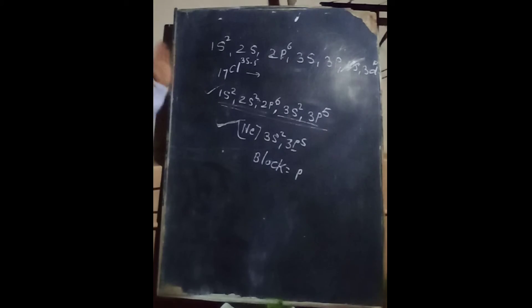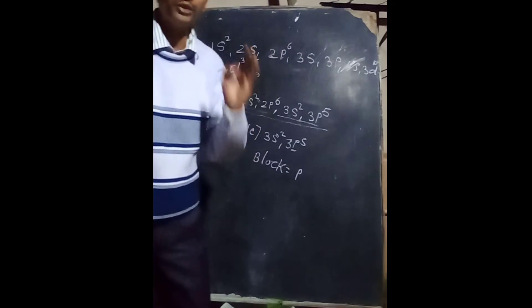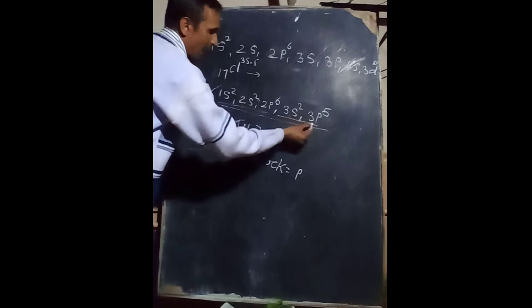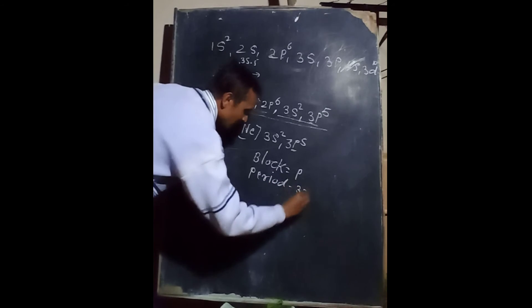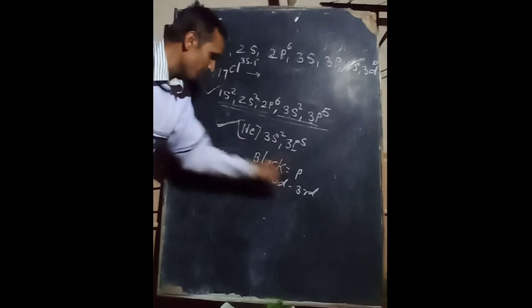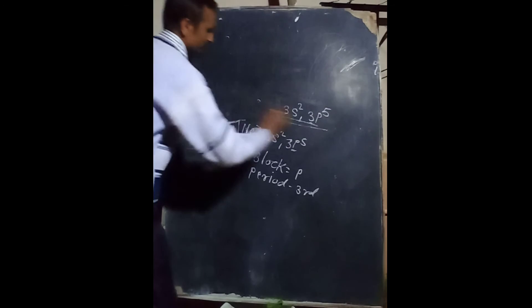The period means the highest energy level — the highest energy level where the last electron went is called the period. Looking at the configuration 1s, 2s, 2p, 3s, 3p — the highest number is 3, so chlorine is in the third period. So for chlorine: block is p block, period is the third period. Now let's find the group using another example.